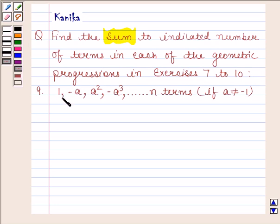The given geometric progression is 1 minus A, A square minus A cube, and so on, up to N terms, if A is not equal to minus 1.